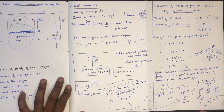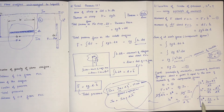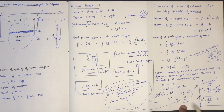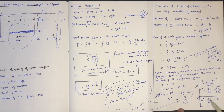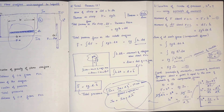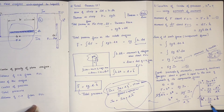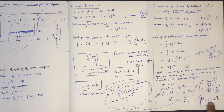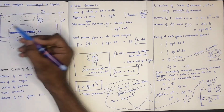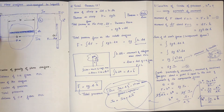Substituting: H-star equals IG plus h-bar squared divided by h-bar, which simplifies to IG divided by A h-bar plus h-bar. Therefore, H-star is equal to h-bar plus IG divided by A h-bar. We can see clearly that H-star equals h-bar plus IG over A h-bar.